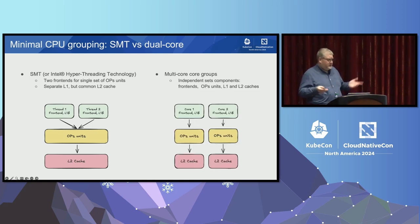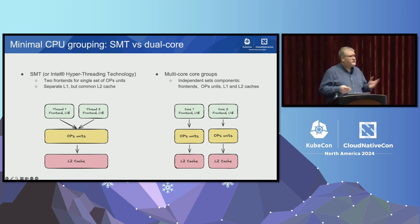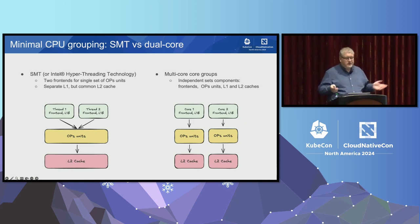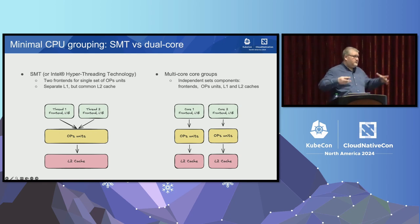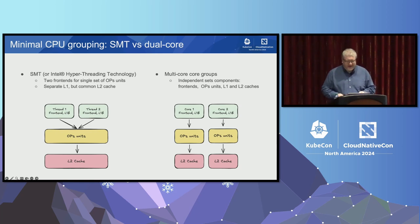An obvious solution is to forget about hyperthreading and get more cores. It works — yes, we can do more cores nowadays. The technology is evolving: you get separate front ends, independent operation units, caches, and so on. The only problem is that space on the chip is limited. So we can increase the number of cores, but you will hit a bottleneck somewhere later in the process.